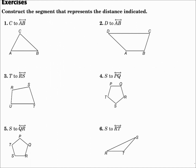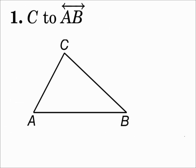Construct the segment that represents the distance indicated. Number 1: From point C to line AB. You can draw straight there on this one — go from C down to line AB and you hit it at a right angle. Make sure that that's a right angle when you connect.